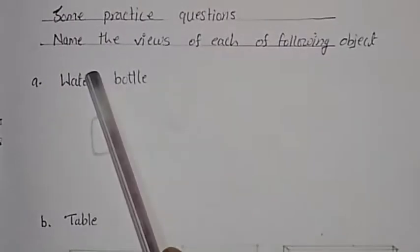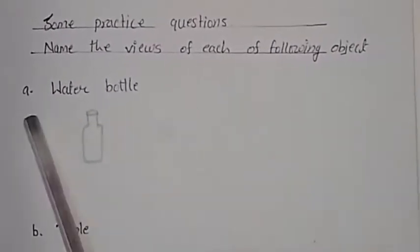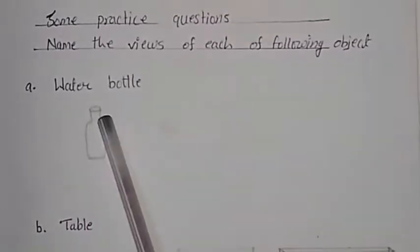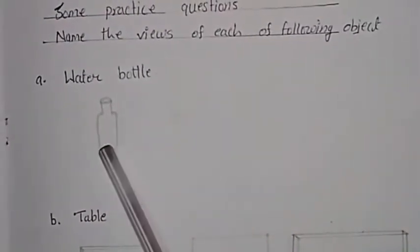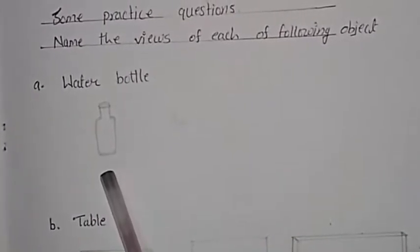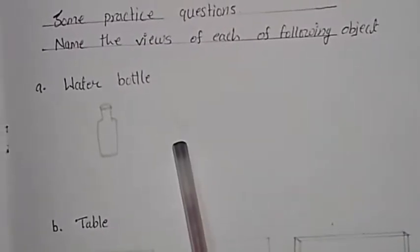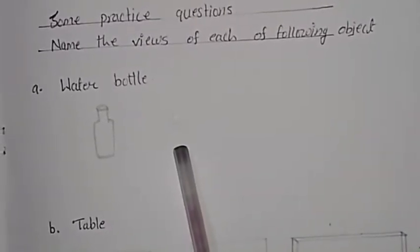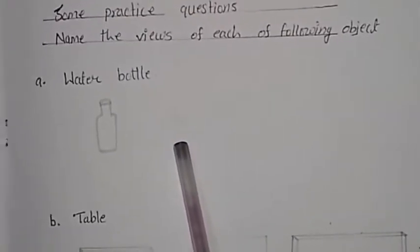Now, some practice questions. Name the view of each of the following objects. Here are some objects. First, water bottle. This is a view of water bottle. Can you imagine in which way the water bottle looks like this? And this is also a view of water bottle in which way the water bottle looks like this.